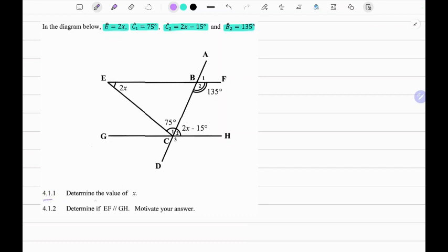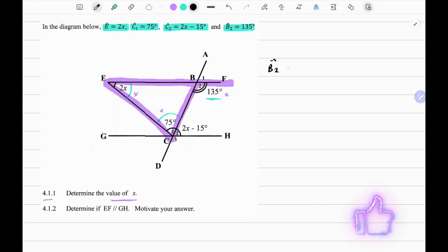The first question says determine the value of x. So I want us to pay attention to B2 which is 135 degrees, and I want us to see that it's an exterior angle to these two angles. If we look at this triangle BCE and extend it, we can see that this angle here is an exterior angle to the two interior opposite angles. We know the exterior angle B2 should equal the sum of the interior opposite angles for a given triangle.